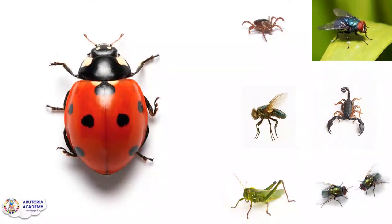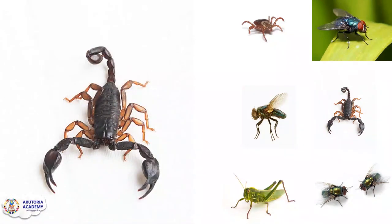You can also see the exoskeleton in this ladybug, covering every part of the insect to protect it. The exoskeleton is seen in virtually all insects. Some insects have a harder exoskeleton while others have a slightly softer exoskeleton, not as hard as others.